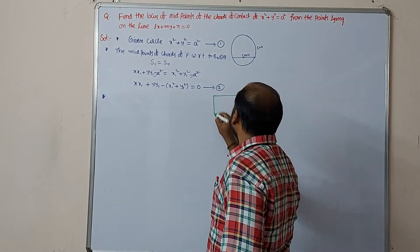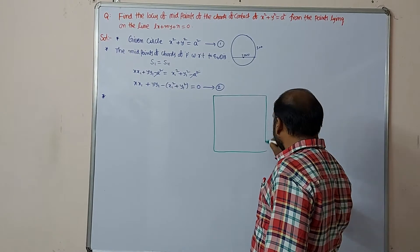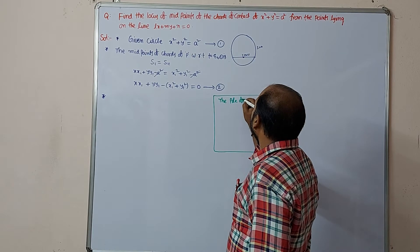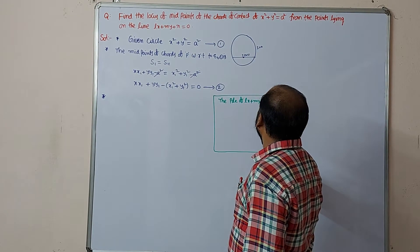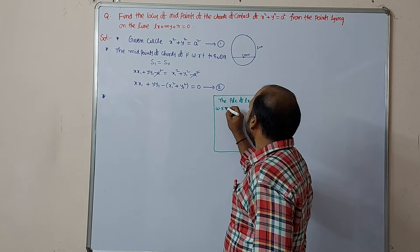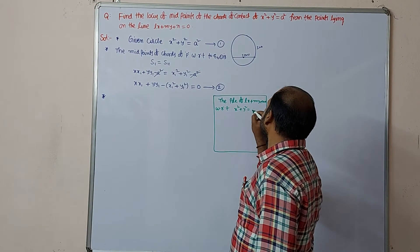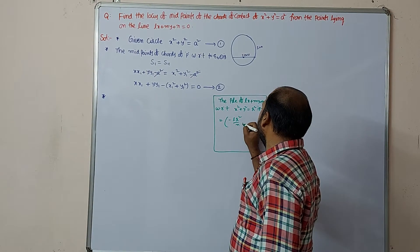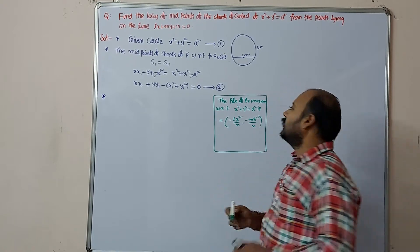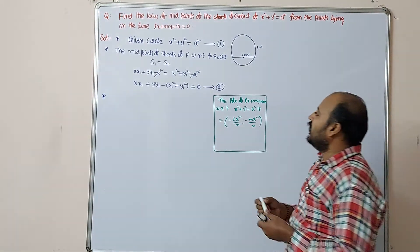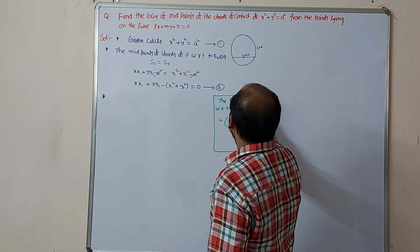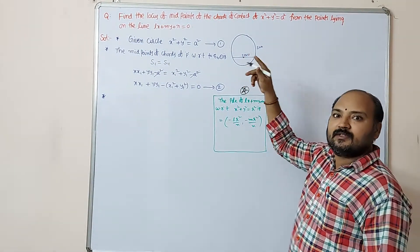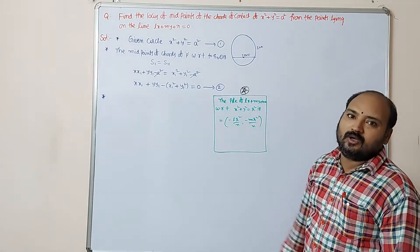Before proceeding, recall the important formula: the pole of the line lx + my + n = 0 with respect to x² + y² = r² is (−lr²/n, −mr²/n). We use this because this point is a pole for the required circle.